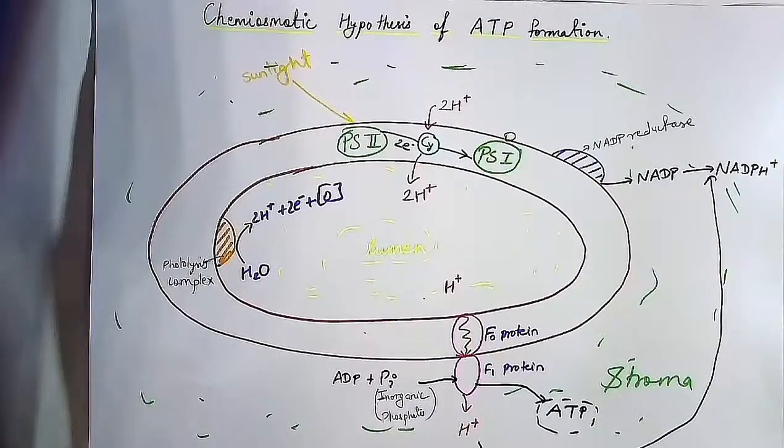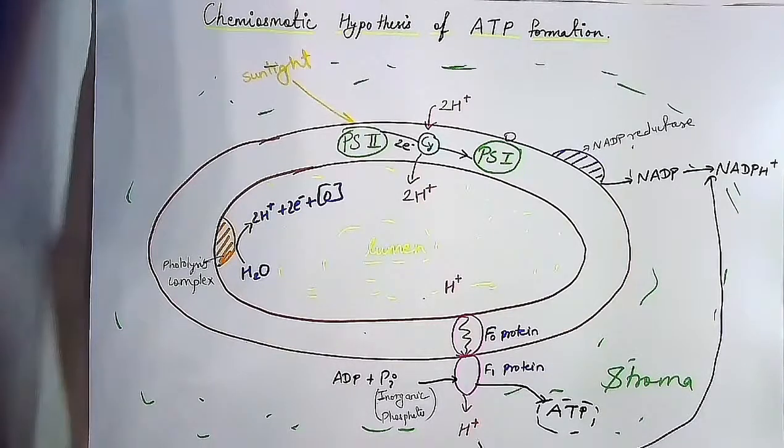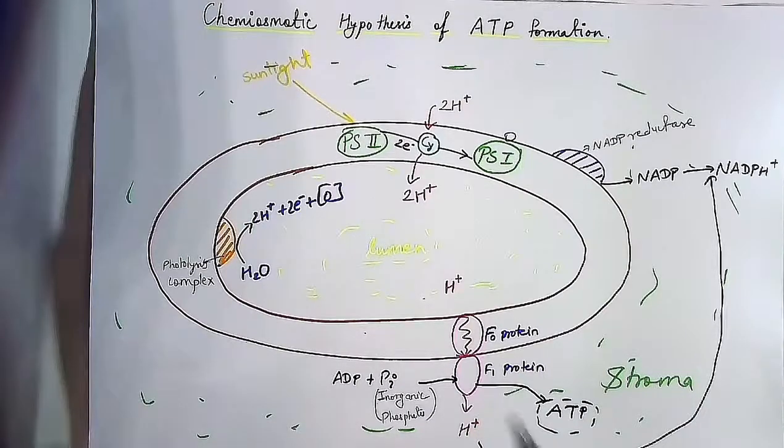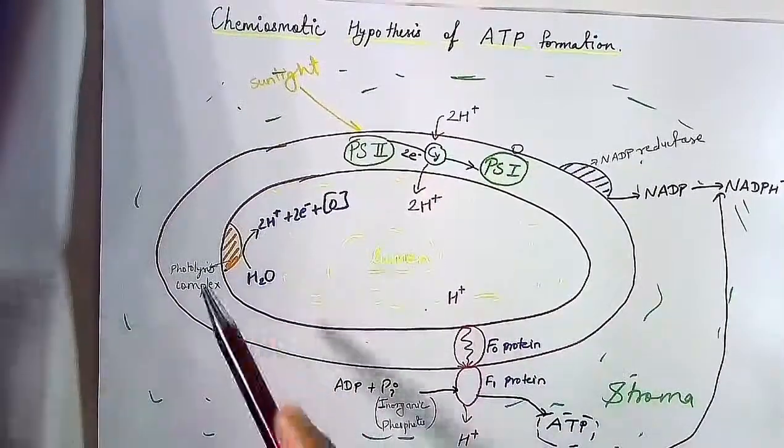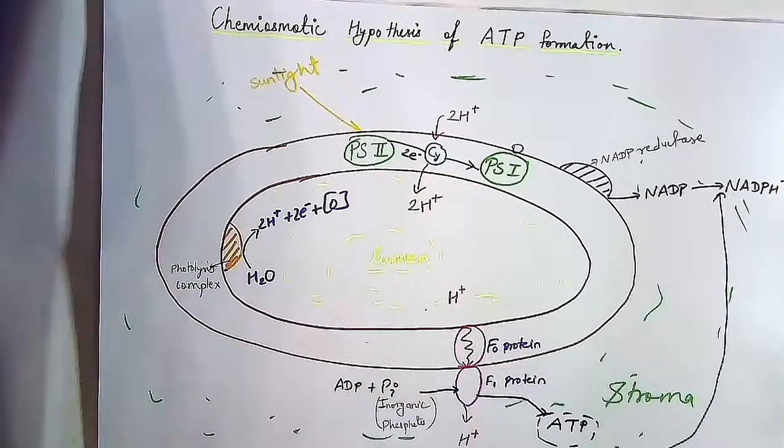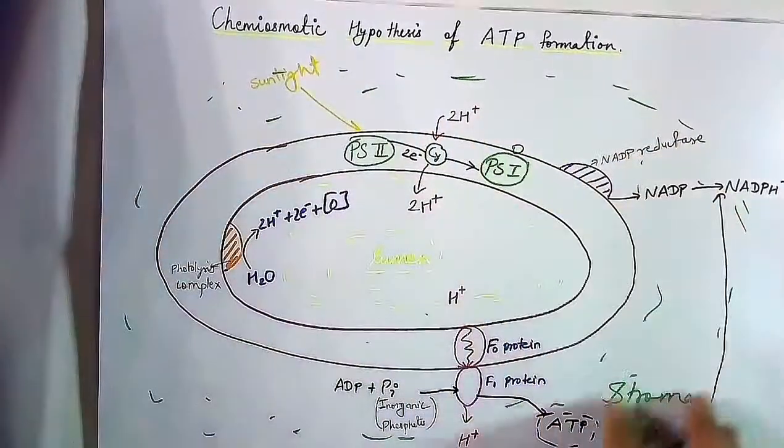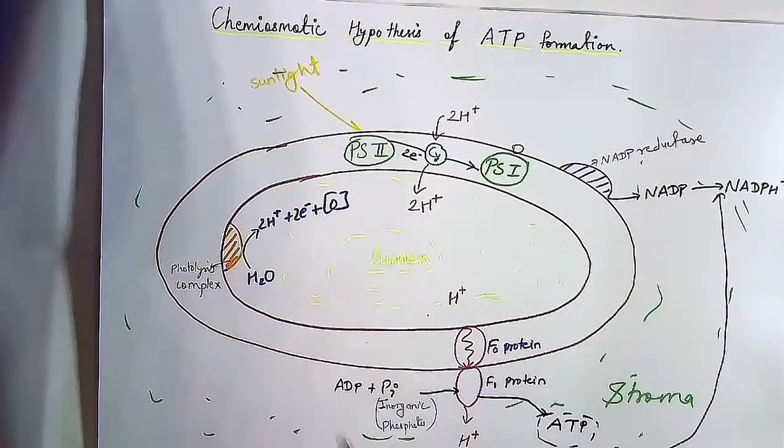The chemiosmotic hypothesis of ATP formation explains how ATP is formed in mitochondria and in chloroplast. This hypothesis was given by Mitchell. In this diagram, this is a thylakoid and this is the stroma of the chloroplast.